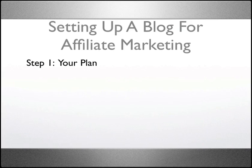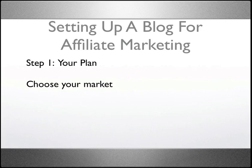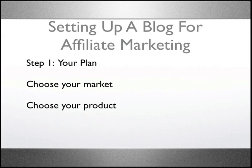Step 1: Your plan. Choose your market. You've got to understand the market where you want to be an affiliate, where you want to sell stuff. Then you're going to want to choose your product. The product that you sell is obviously going to relate to the person that you want to sell to. You can get products from all kinds of different affiliate networks — Clickbank.com, Pay.com, CJ.com, Linkshare, ShareASale. There are affiliate networks all over the internet, and even privately hosted affiliate programs. Choose your product based upon the client you want to sell to and the knowledge that you have.